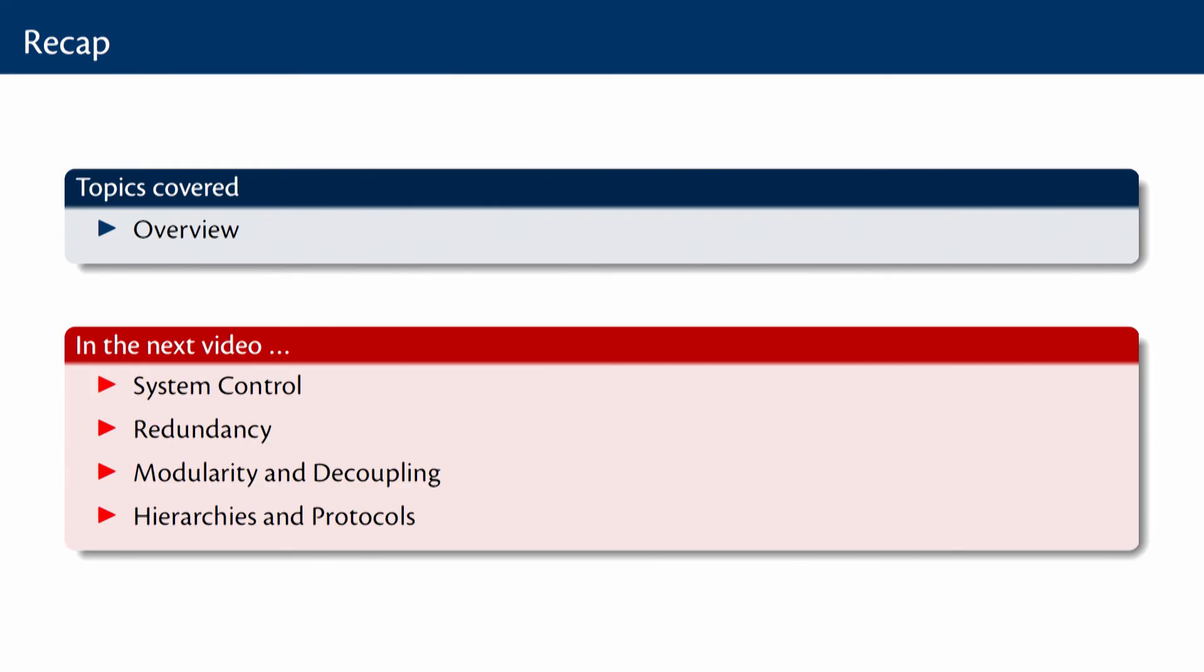In today's video, we had an overview of the concepts of robustness in biological systems. And in the next few videos, we will start looking at the mechanisms underlying robustness. In the very next video, we will look at the key mechanisms underlying robustness, namely system control, redundancy, modularity and decoupling and what kind of hierarchies and protocols are used in biological systems which all contribute to robustness in different ways.